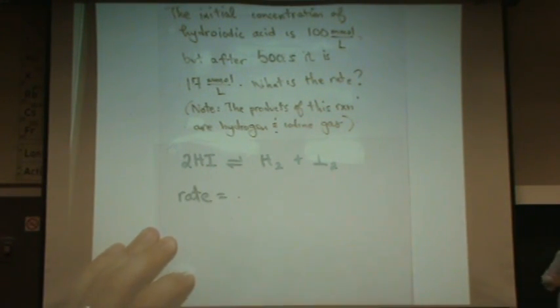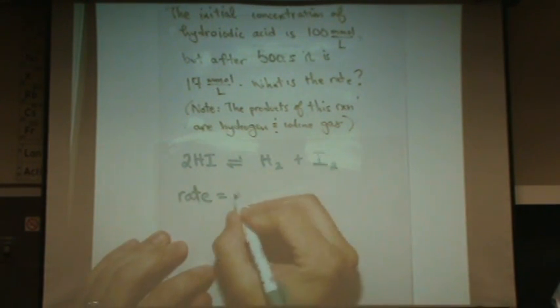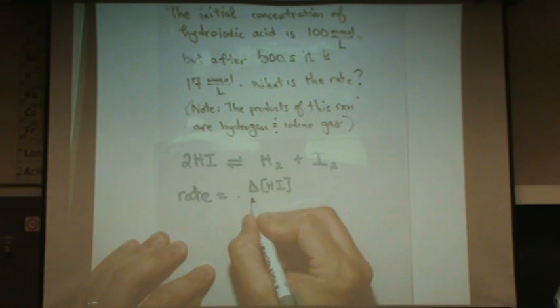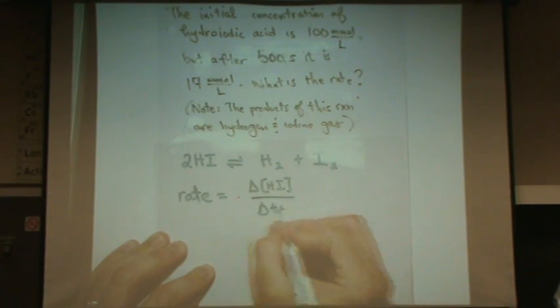Rate equals, it's going to be the change in concentration of what we're interested in divided by the change in time. So I'm going to leave all space here. First I'll write the change in concentration of the HI over the change in time.